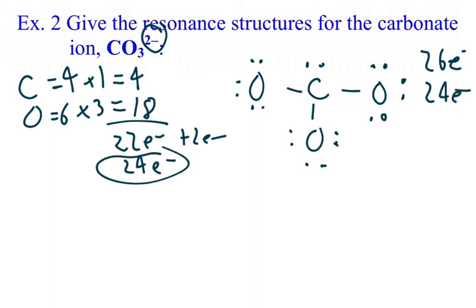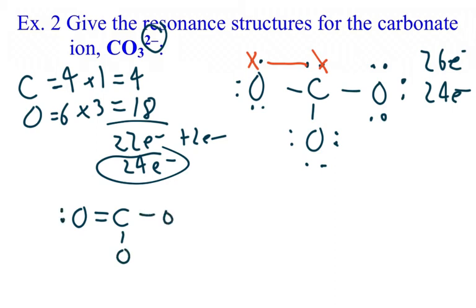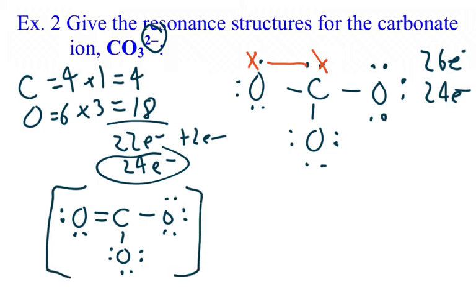For this one, you're going to see there are three possibilities. First, let's say we take one from here and one from here and form our double bond there. The result would have the double bond on the left side, a single bond on the bottom, and a single bond on the right side. We fill in the lone pairs, and this would be one possible structure. Since it's a polyatomic, we put the charge on the corner.